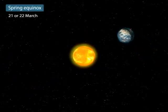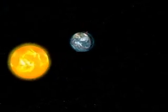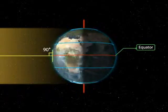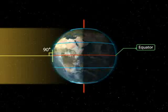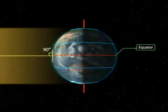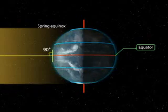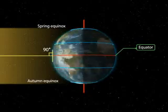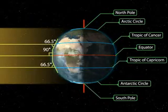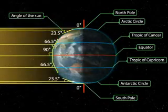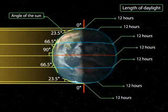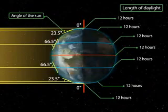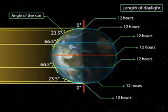Spring equinox: On the 21st or 22nd of March, the overhead Sun is over the equator. The equator receives the largest amount of solar radiation. At this time, the northern hemisphere is in the spring equinox, while the southern hemisphere is in the autumn equinox. The angle of the Sun decreases towards the poles. On this day, the two hemispheres receive a similar amount of solar radiation, and the length of day and night is the same at all places on the Earth.